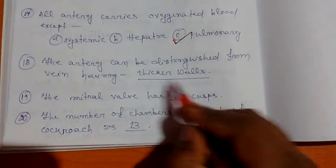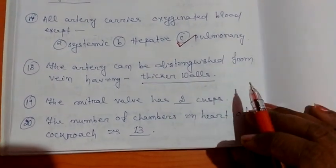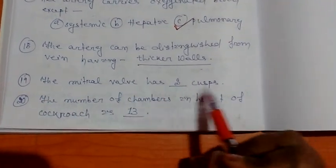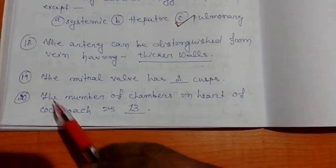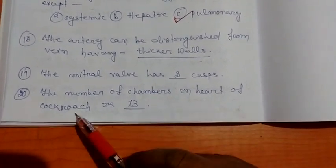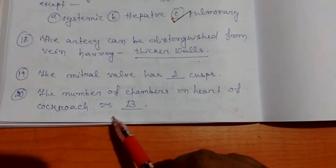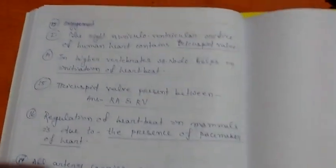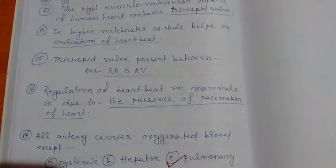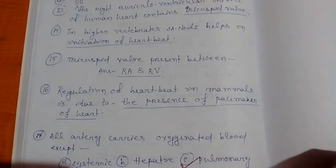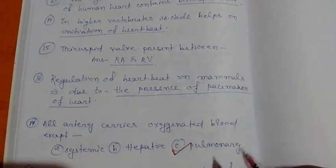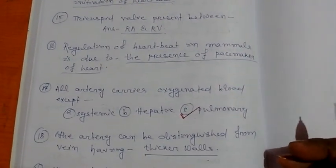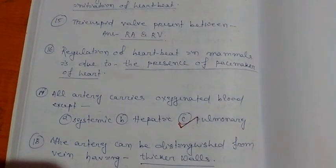Question number 18: an artery can be distinguished from a vein by having a thicker wall — arteries have thicker walls than veins. Question 19: the mitral valve has two cusps. Question 20: the number of chambers in the heart of a cockroach is 13 — the heart of a cockroach is divisible into 13 chambers. These are all the questions regarding human heart structure and function; I have more questions to discuss in my next video. Thanks for watching, bye.